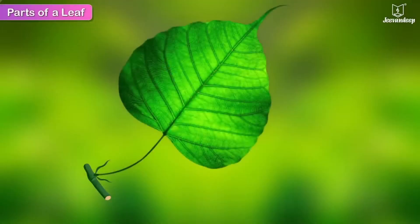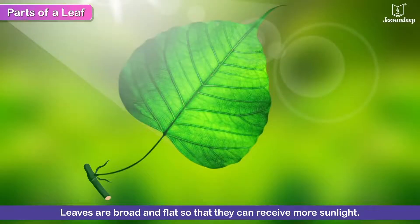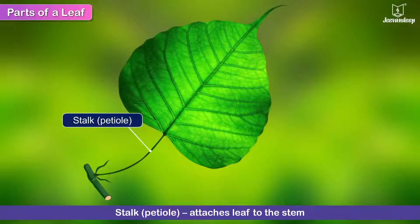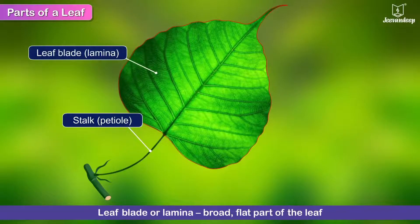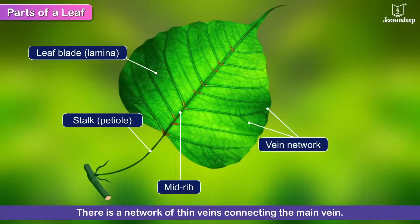Parts of a Leaf. Leaves are generally broad and flat so that they can receive more sunlight. The leaf is attached to the stem by a stalk or petiole. The leaf blade or lamina is the broad, flat part of the leaf. It has a main vein called the midrib going through the center of the leaf, and a network of thin veins connecting the main vein.